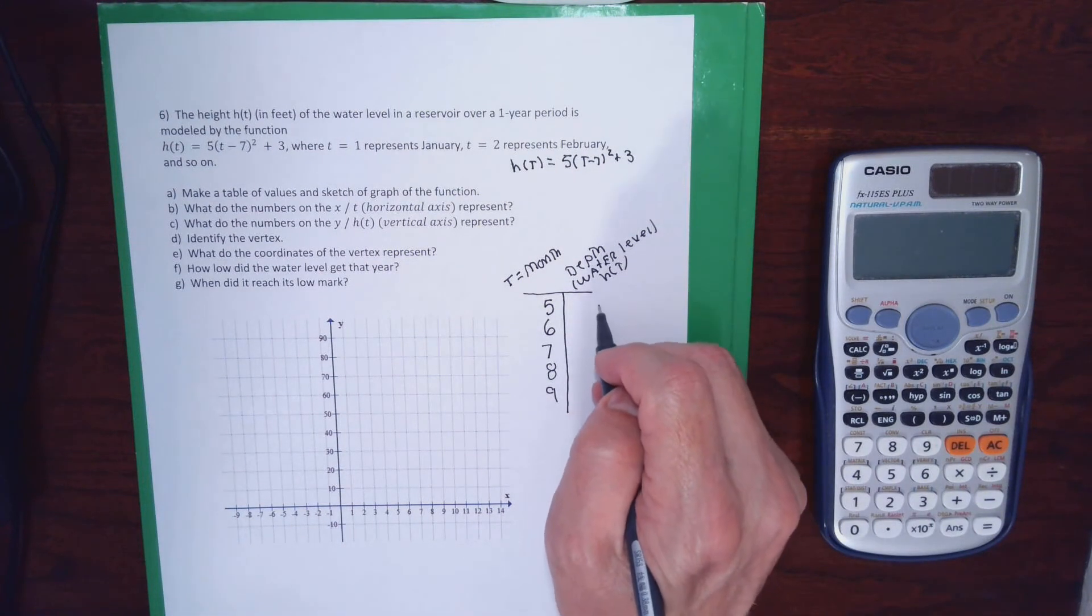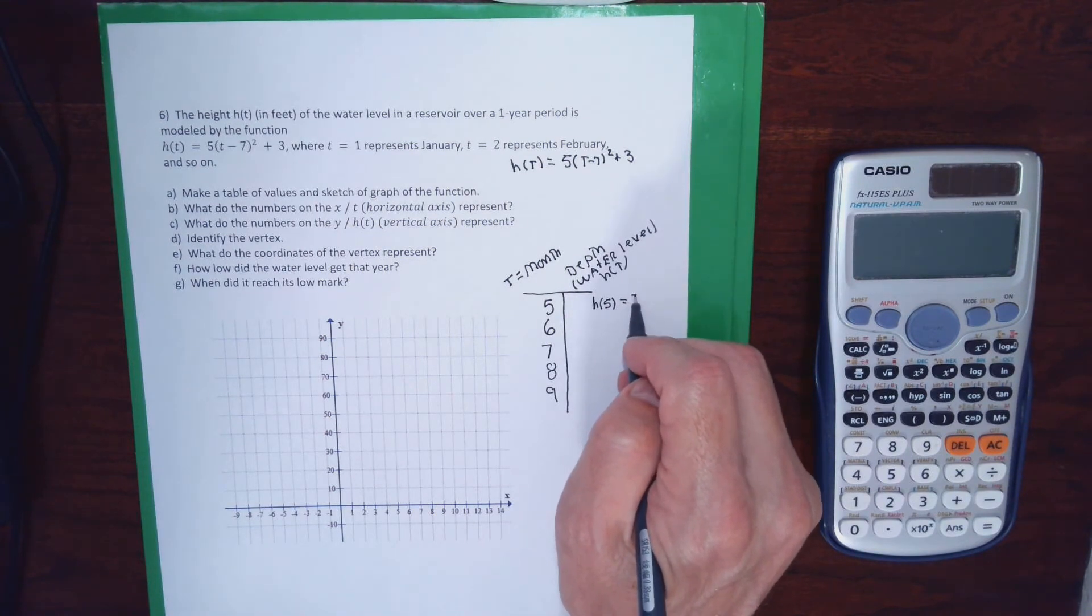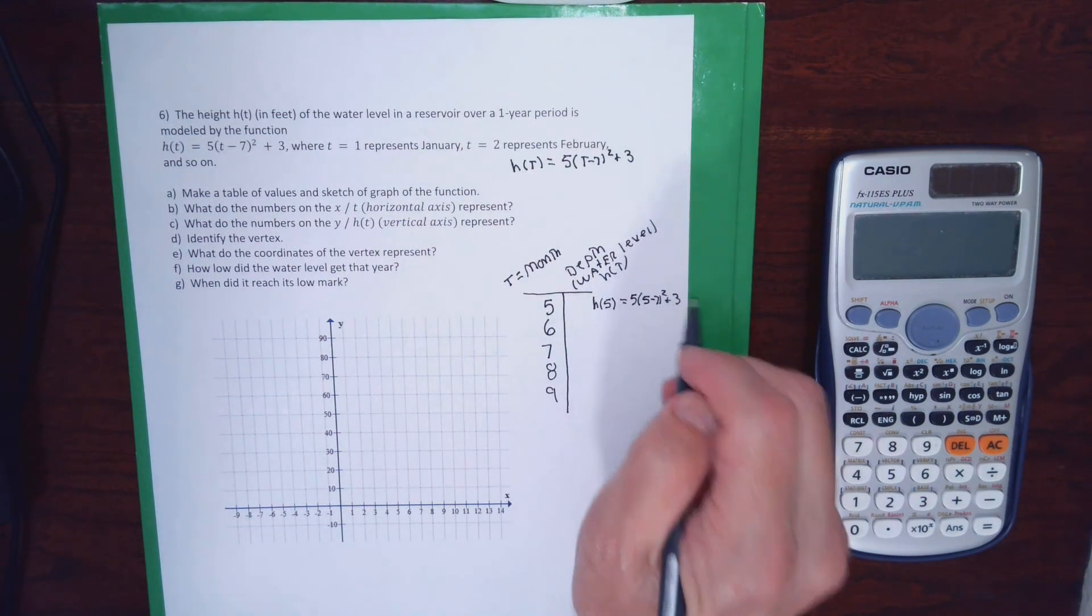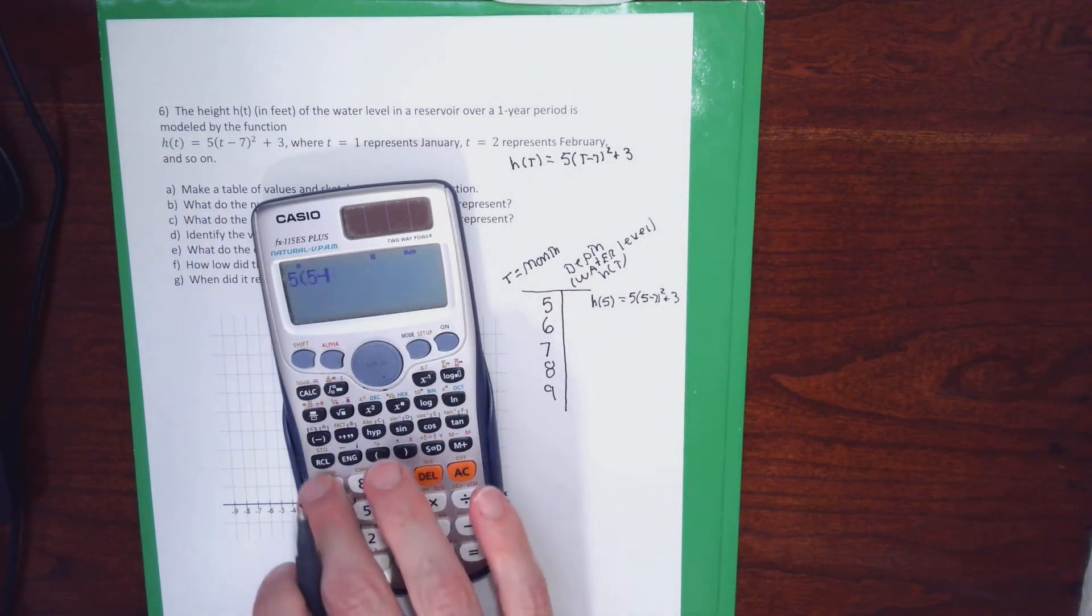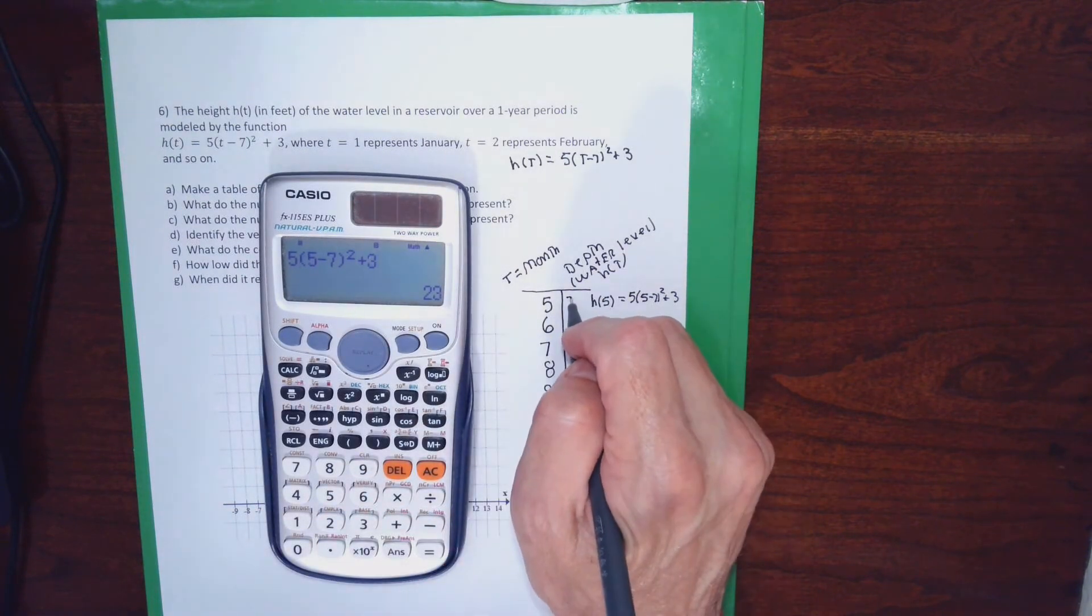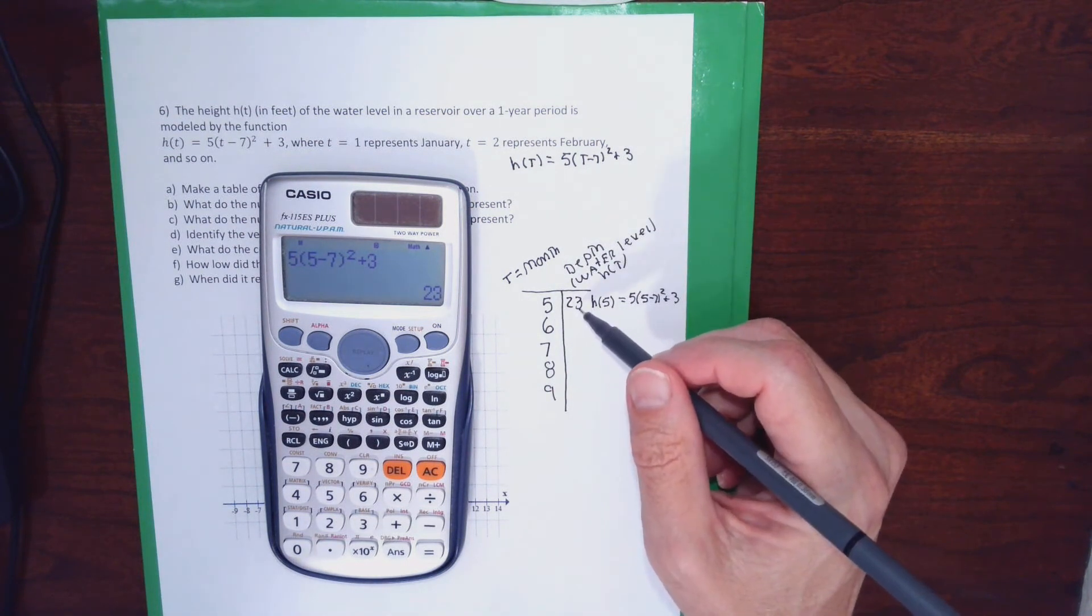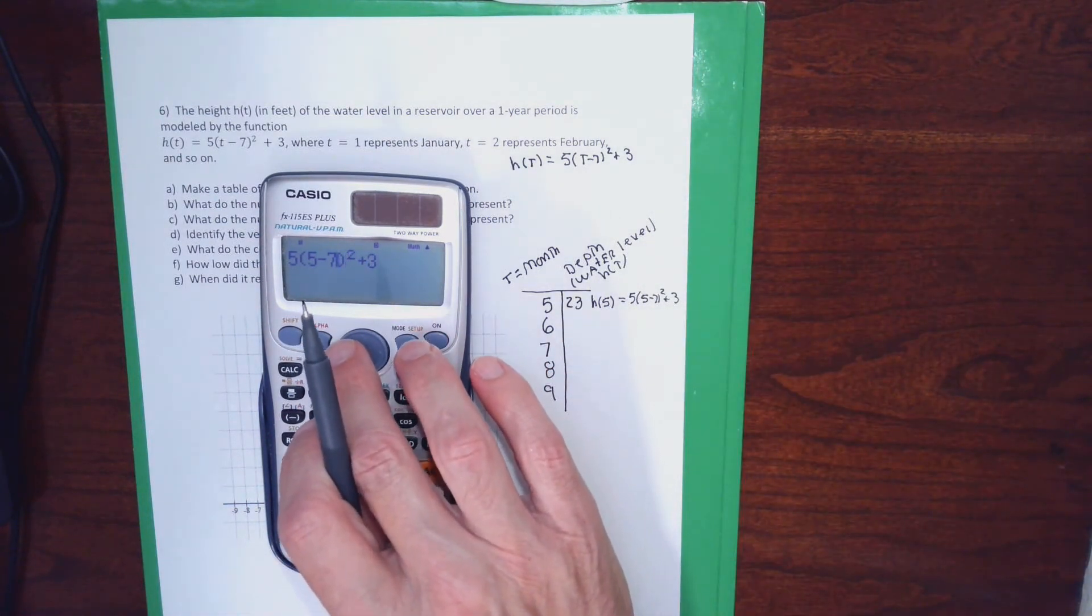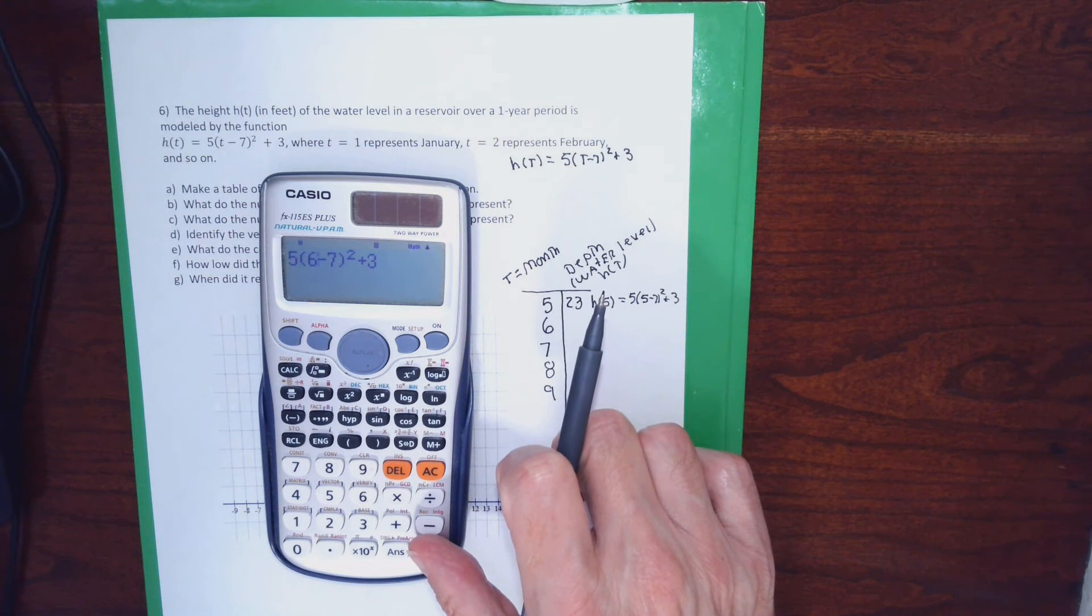So those numbers in the X column are months of the year. Now for each X, I'm going to get a Y. The first one I'm going to do, H of 5 equals 5 times 5 minus 7 squared plus 3. So 5 times 5 minus 7 squared plus 3. That's 23 feet, so this point right here would say in May, the average depth of the reservoir was 23 feet. So each point, the X is the month of the year and the Y is the depth.